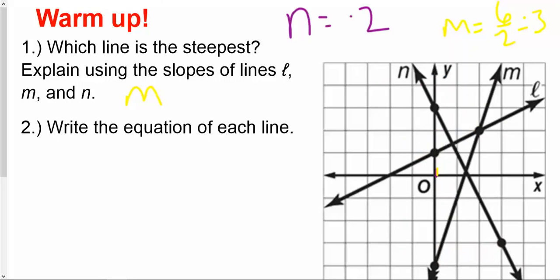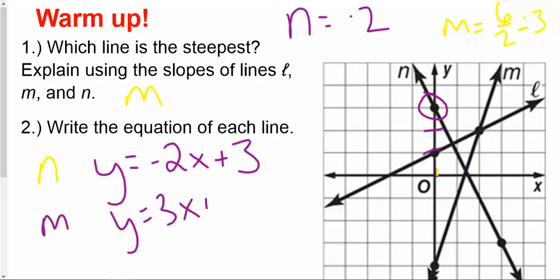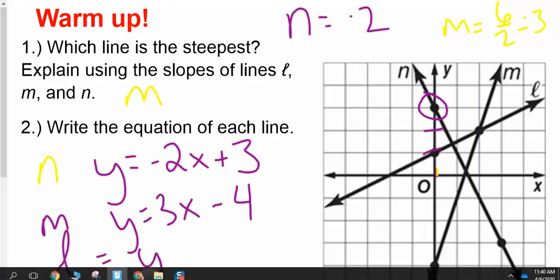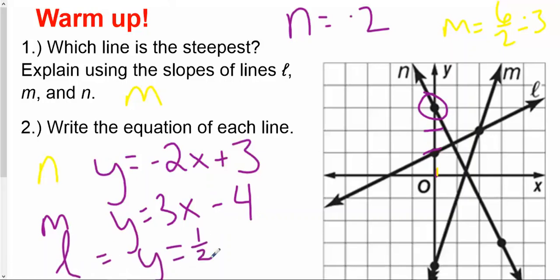If we look at L, L is actually going to have a slope of one-half, and that's definitely not steep. We want to write the equation for each line. So, let's start with N. N has a slope of negative two. So, Y equals negative two X. And then if I look at its Y intercept, it's three. So, plus three. For M, M had that slope of three. So, Y equals three X plus, well, what's its Y intercept? That's a negative four. So, I'm actually going to change this to a subtraction of four. And then lastly, we have L. Line L has that slope of one-half. And then we're going to say that its Y intercept is right here. So, that's plus one.